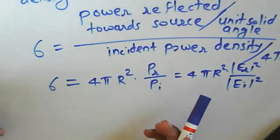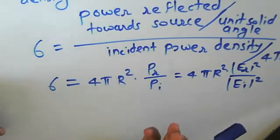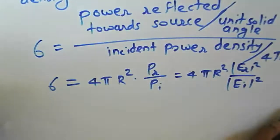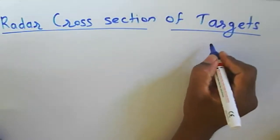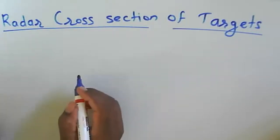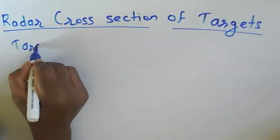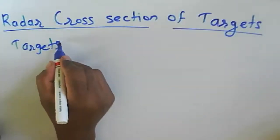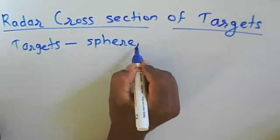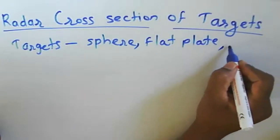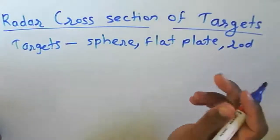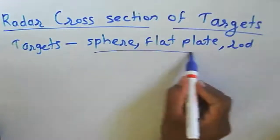We will now discuss various types of targets and their shapes. The target can be a sphere, a flat plate, a simple wire or rod, a cylindrical shape, or a cone shape. There are various types of object shapes, and we will examine each one.